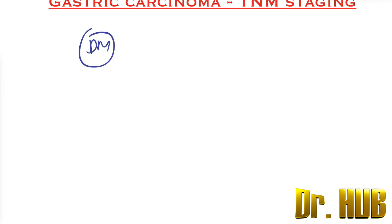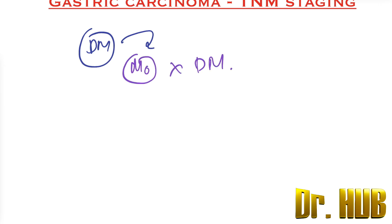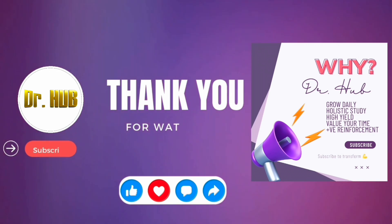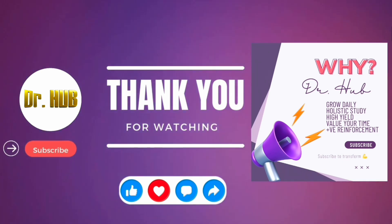Lastly, distant metastasis (DM): M0 means there is no distant metastasis, and M1 means there is distant metastasis. To learn and grow daily, please do subscribe.